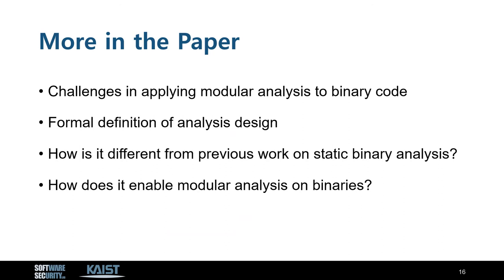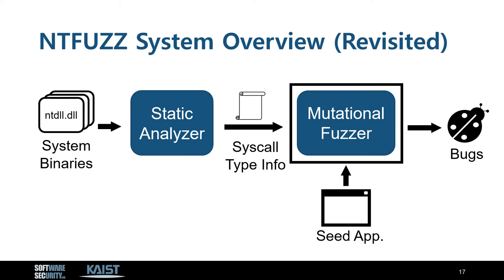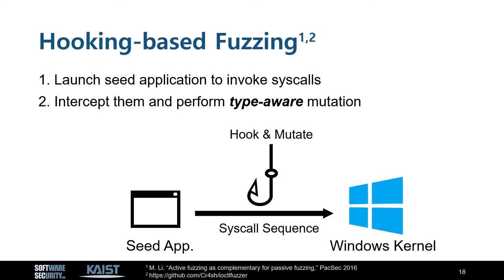Modular analysis itself is not a novel idea, but applying it at the binary level is challenging. Please refer to our paper for more details about our novel analysis design and how it enables modular analysis on binary code. I have described the static analysis module of NT-Fuzz. Now, I will briefly introduce the fuzzing module which leverages the syscall type information obtained from our static analyzer. We use hooking-based fuzzing to fuzz the Windows kernel. We first launch a seed application to spawn a sequence of well-formed syscalls. Then we intercept these syscalls and perform type-aware mutation by utilizing the provided type information. For pointer-type arguments, we have to traverse into their content and perform mutation recursively.